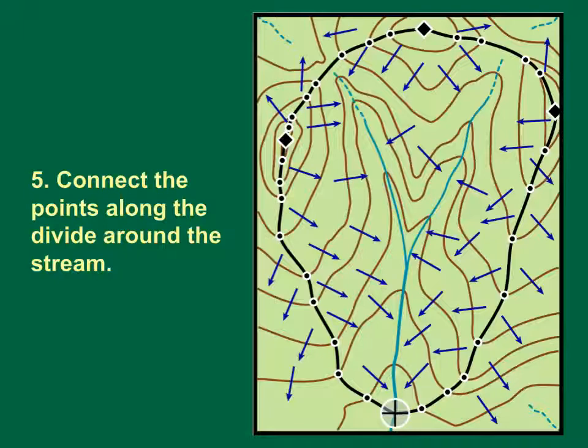In very flat areas with few contour lines and few definable topographic high points, it can be difficult or impossible to unambiguously define a watershed divide. In such cases, the convention is to split the distance between adjacent watercourses in areas where topographic delineation is impossible.